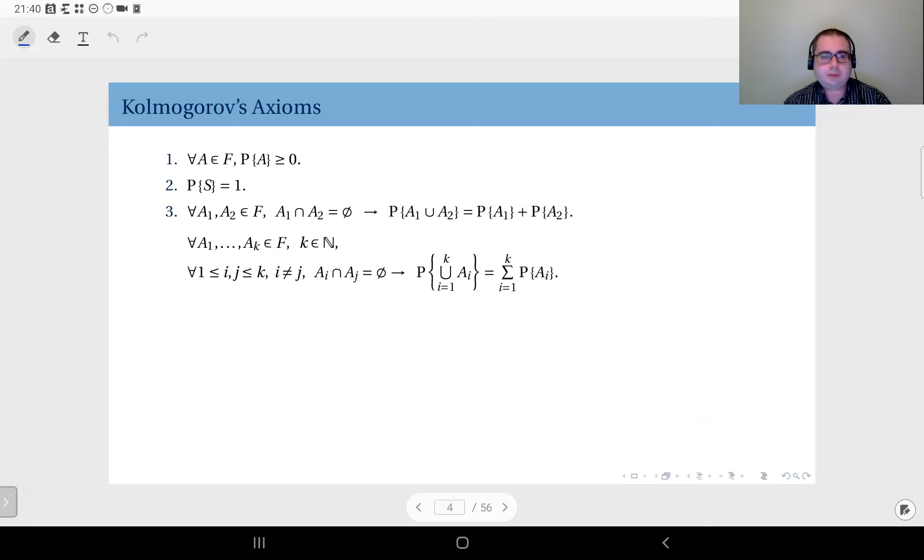To have a probability theory, your probability measure must satisfy these rules. First axiom: for any event A, the probability you assign to A must be non-negative—either zero or positive. That's the first rule. Number two: the probability you assign to the sample space—recall S is the sample space, the set of all possible outcomes—the probability assigned to this set must be one.